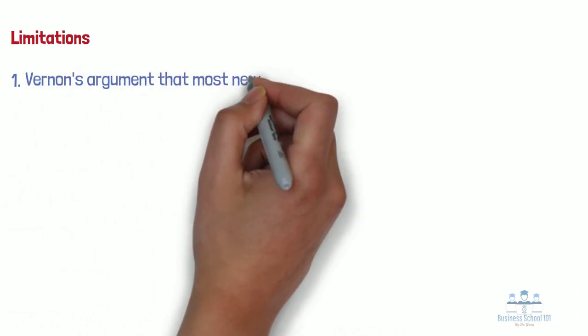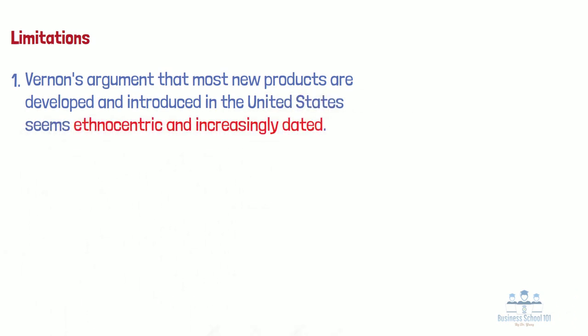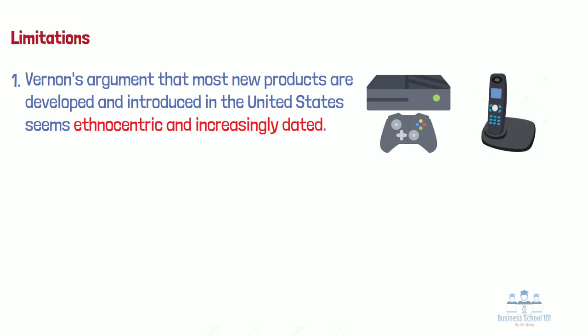However, the product life cycle theory is not without weaknesses — it suffers from two major limitations. First, viewed from an Asian or European perspective, Vernon's argument that most new products are developed and introduced in the United States seems ethnocentric and increasingly dated. Although it may be true that during US dominance of the global economy most new products were introduced in the United States, there have always been important exceptions, and these appear to have become increasingly common in recent years. For example, video game consoles were first introduced in Japan, and new wireless phones were first introduced in Europe.